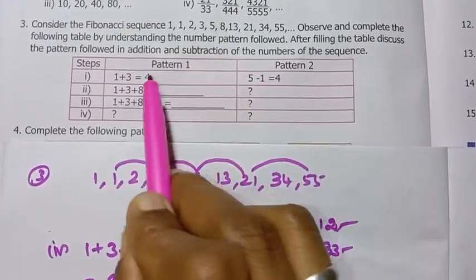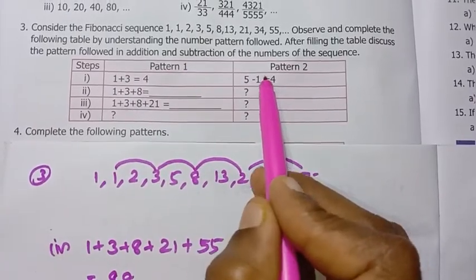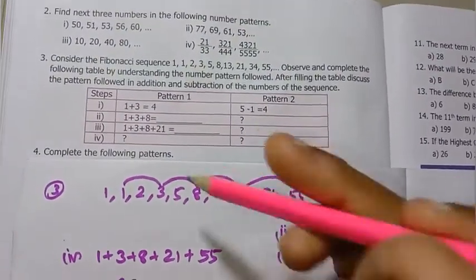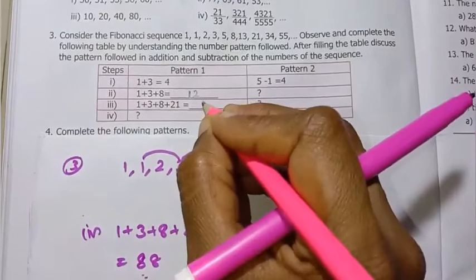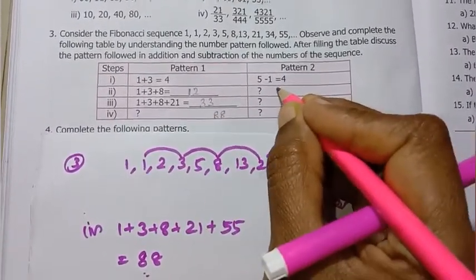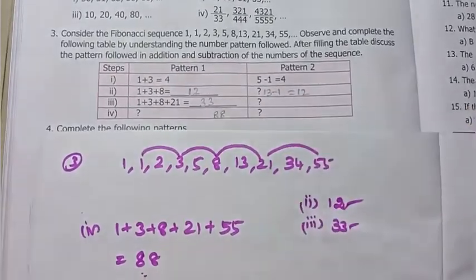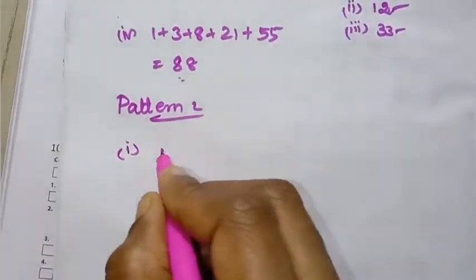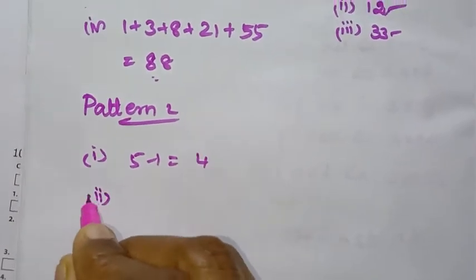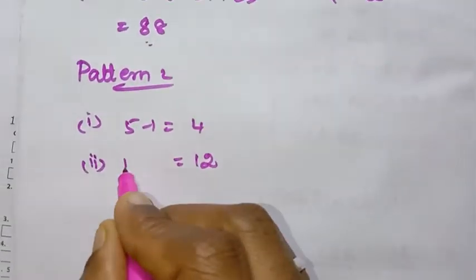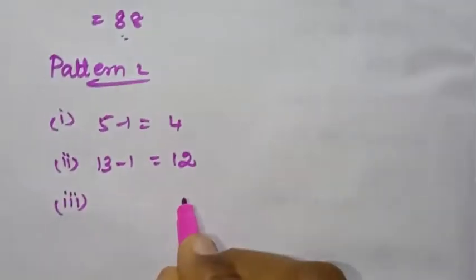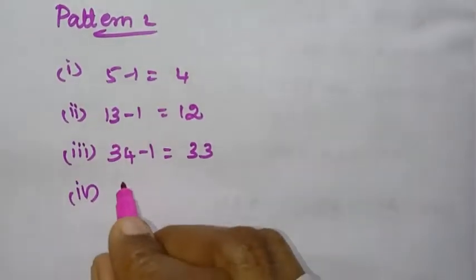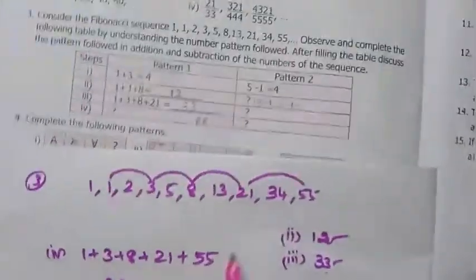Pattern 2: 5 minus 1 equals 4. The second answer is 12, and 12 equals 13 minus 1. Then 33 equals 34 minus 1. The fourth answer is 88, and 89 minus 1 equals 88. So Pattern 2 shows that each sum equals the next Fibonacci number minus 1. Pattern 2 answer is complete.